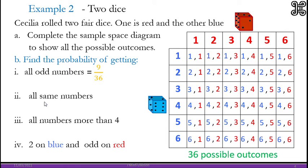Then we have probability that they will all show the same numbers. Count the same numbers. So the answer will be 6 out of 36.